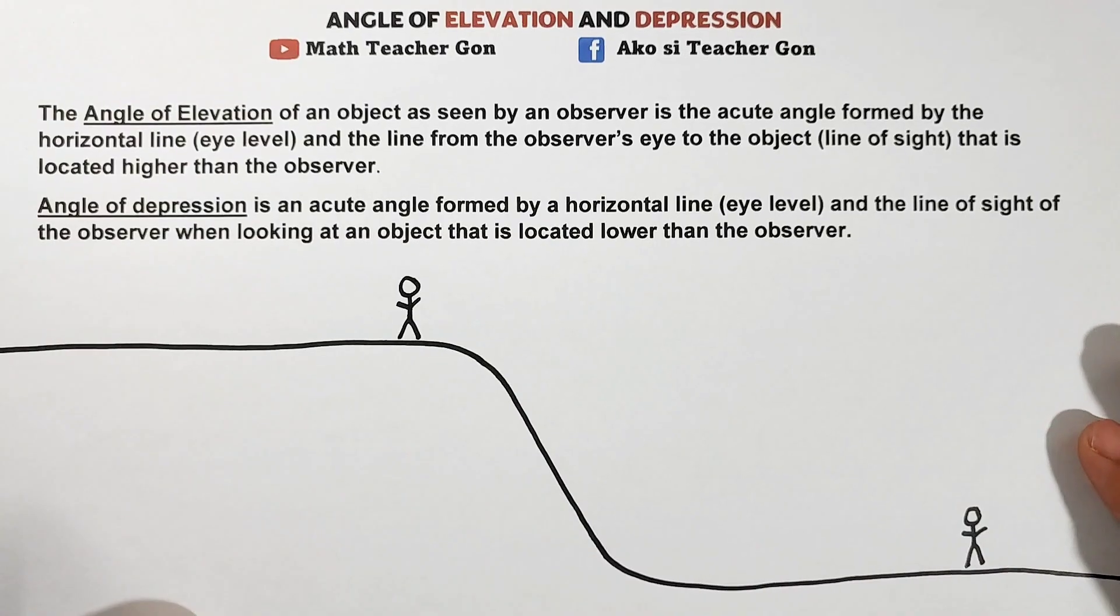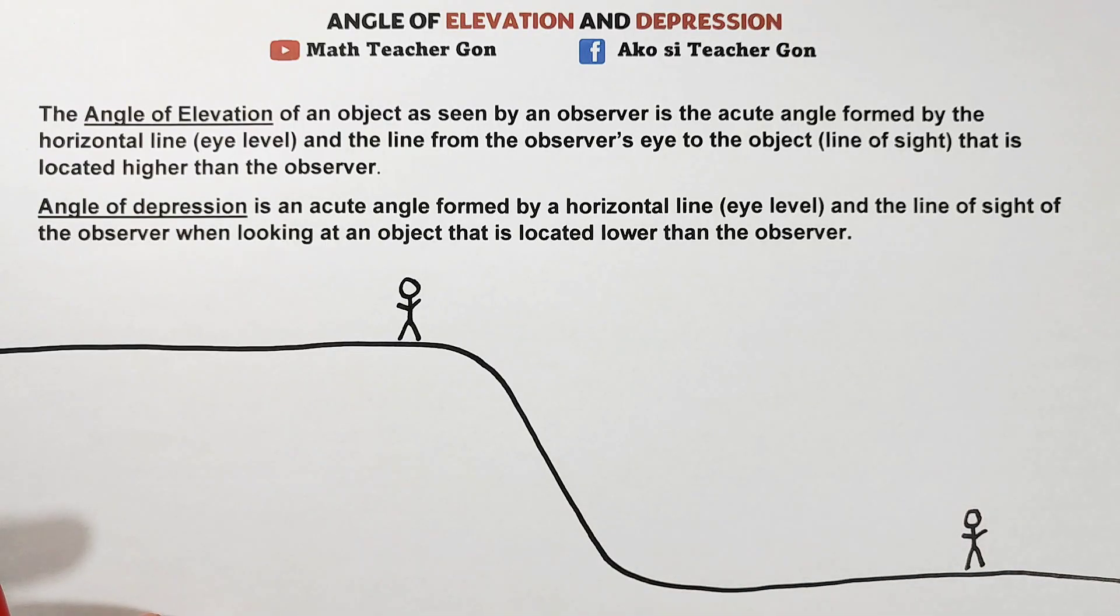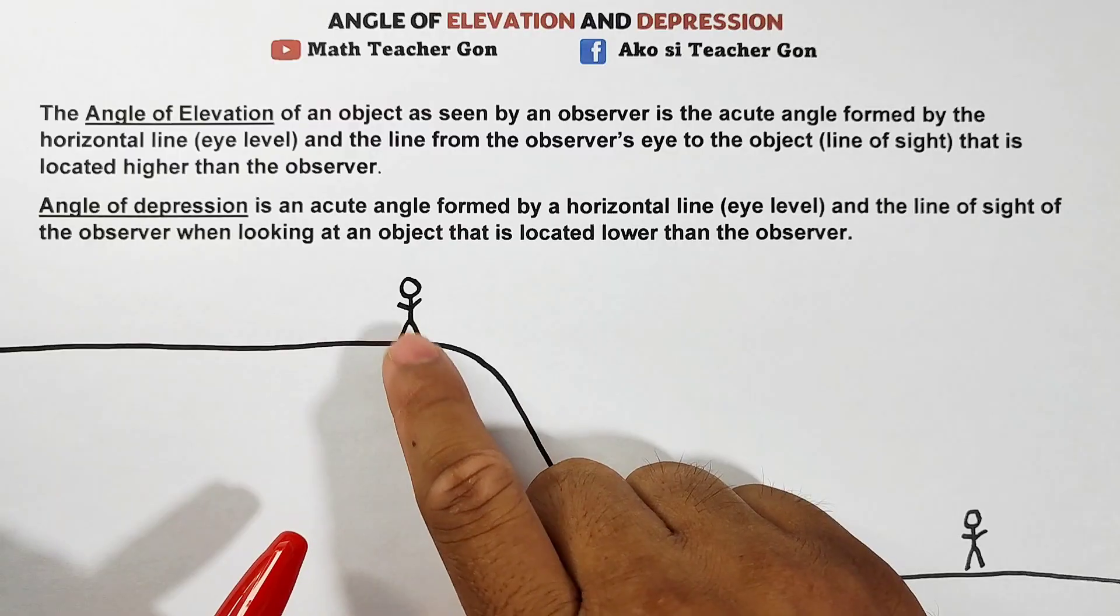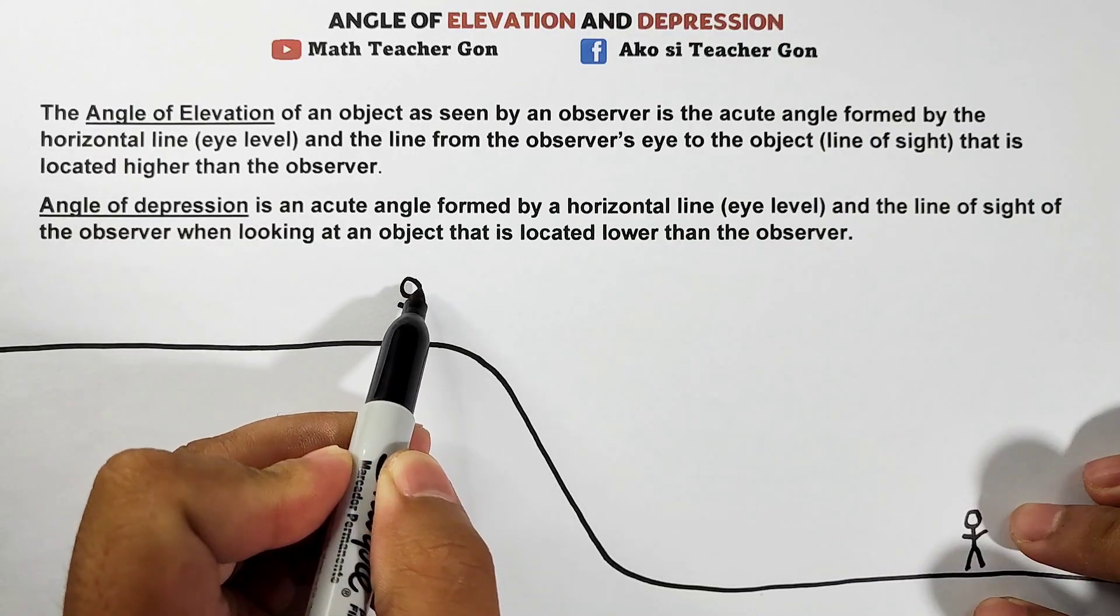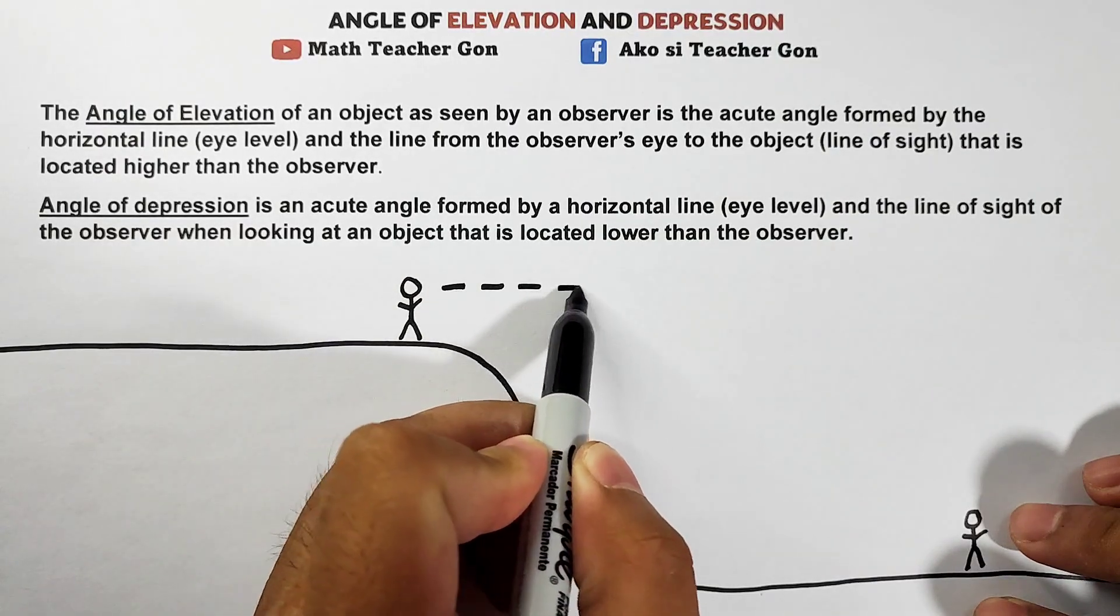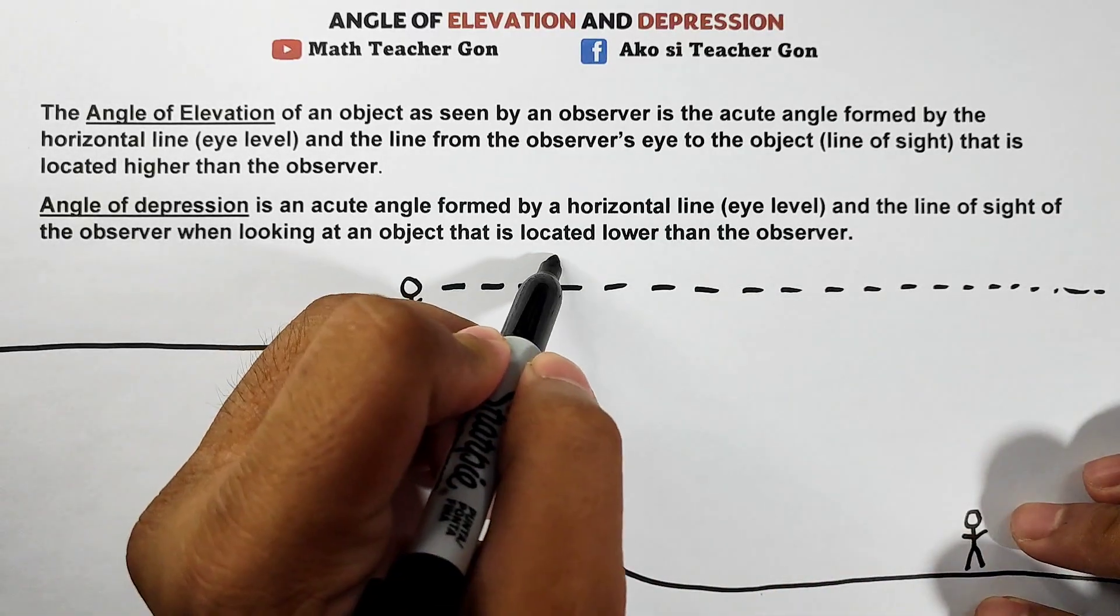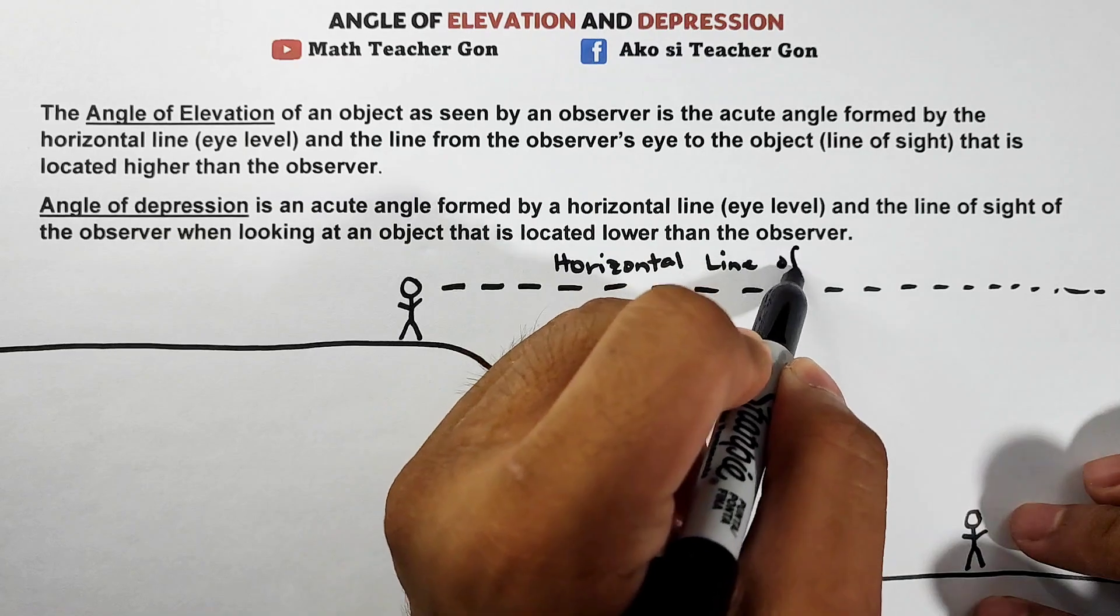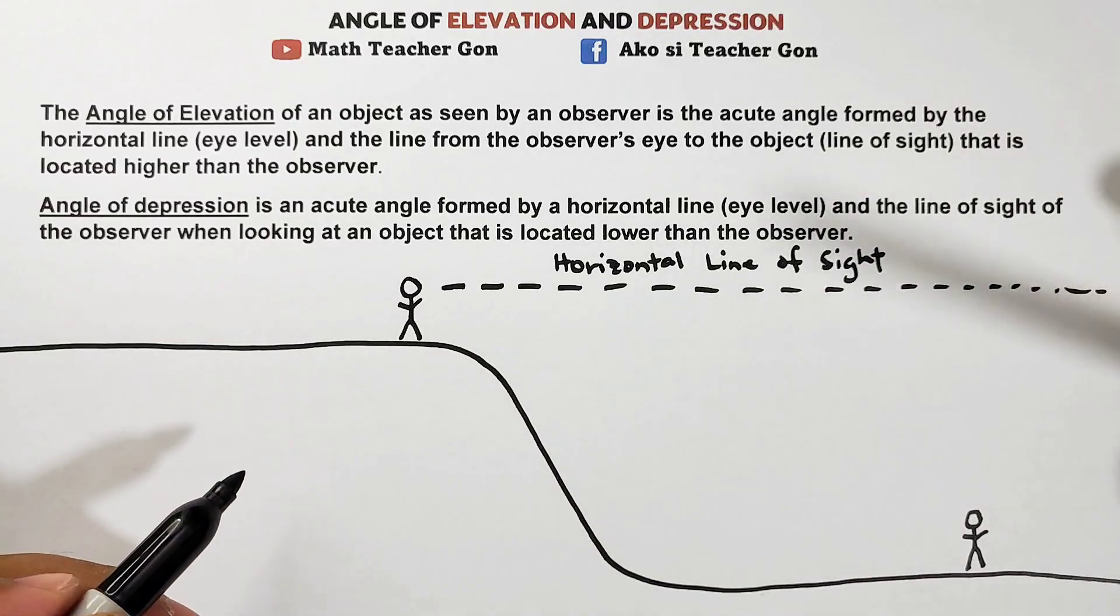Now for you to realize and understand more about this definition of angle of elevation and depression, I have here an illustration of two people standing, one is at the uphill and one is at the downhill. Let's draw a line parallel to the ground from the line of sight of this person. This broken line represents the horizontal line of sight of a person.